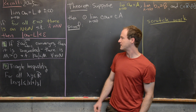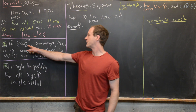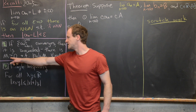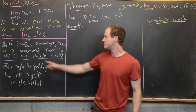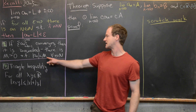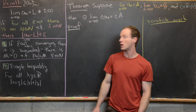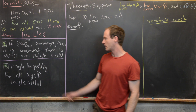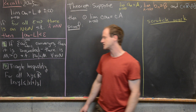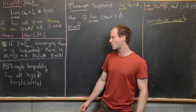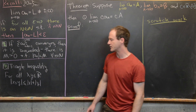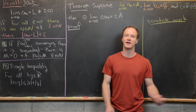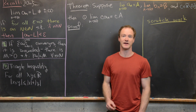We proved in a previous video that if we have a sequence that converges, then it's bounded — there exists a positive number M such that |a sub n| is less than M for all natural numbers n. And we'll need the triangle inequality, which says for all real numbers x and y, |x + y| is less than or equal to |x| + |y|. This inequality is used all the time in real analysis.